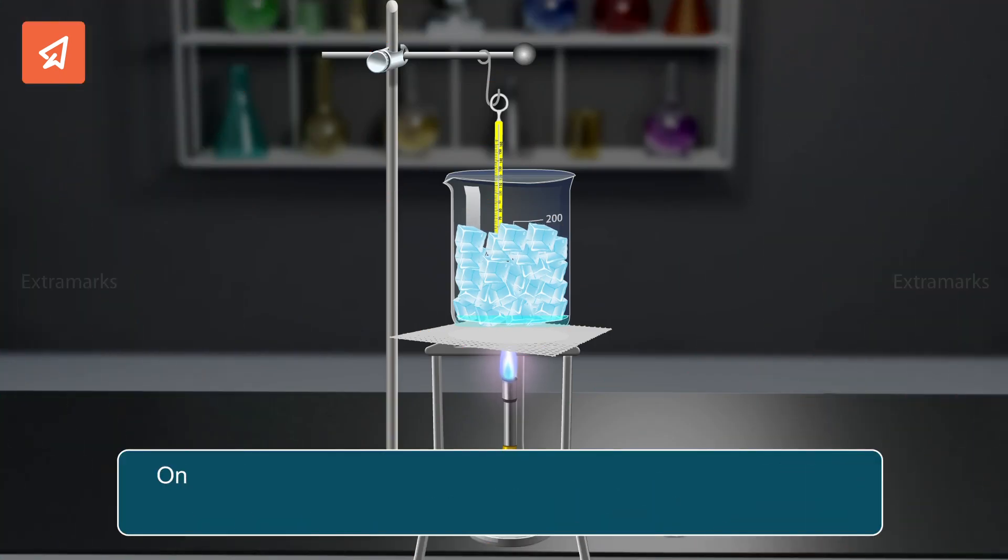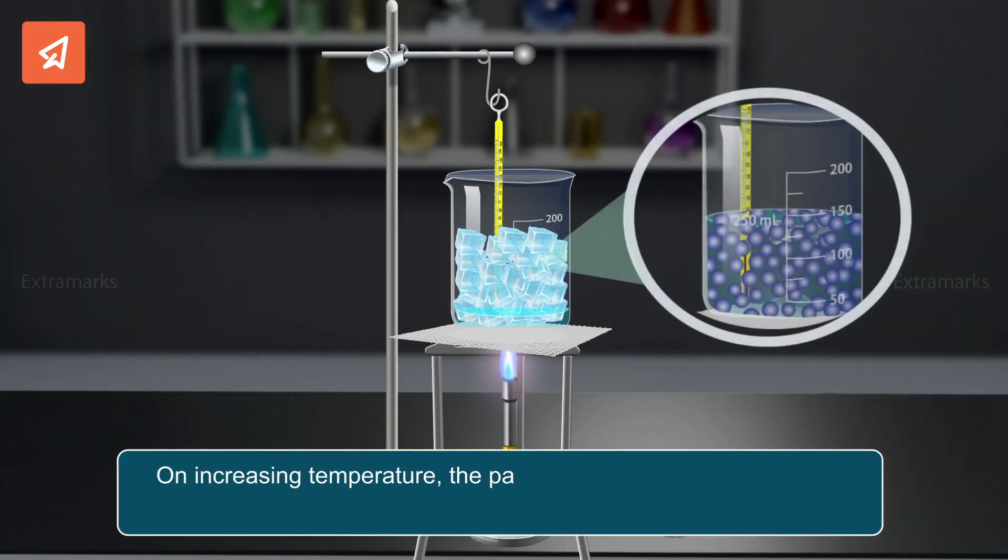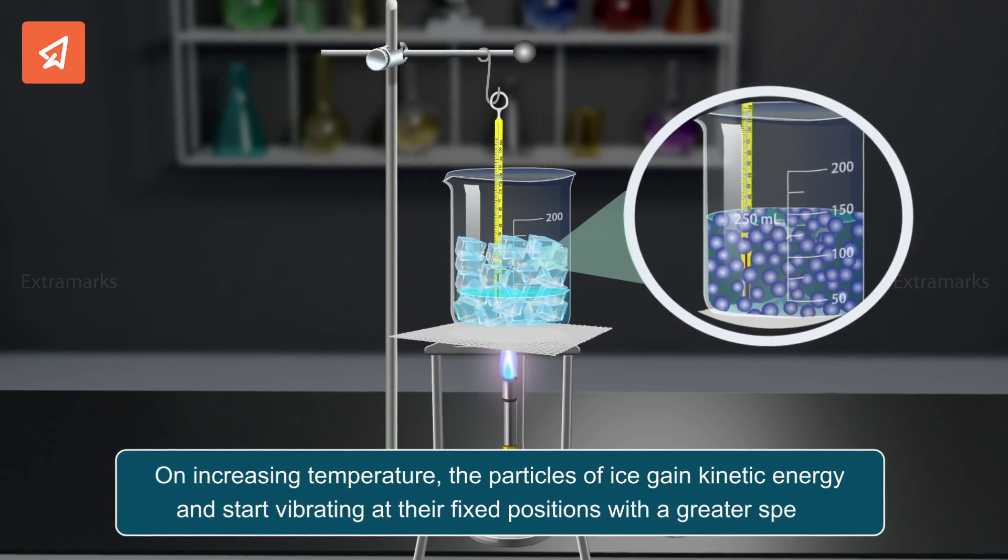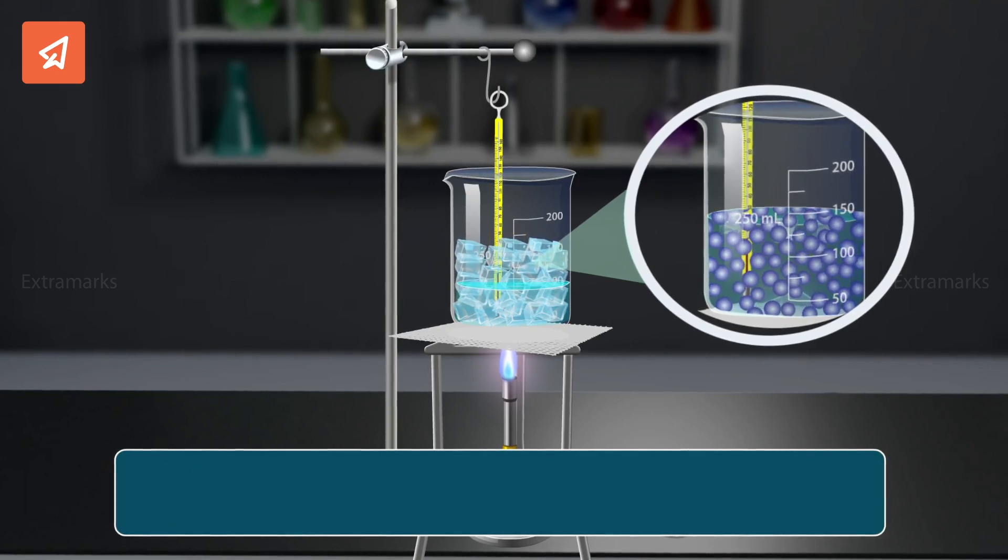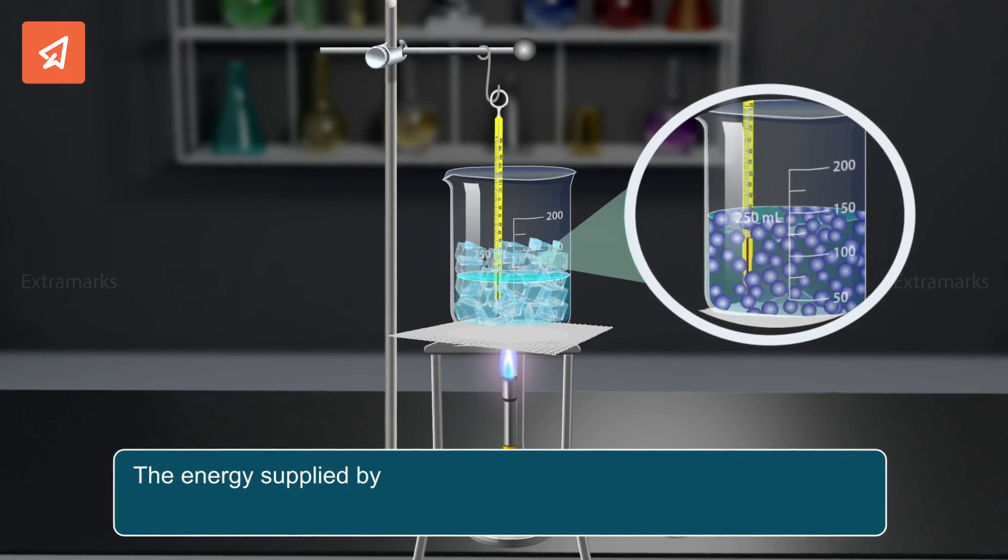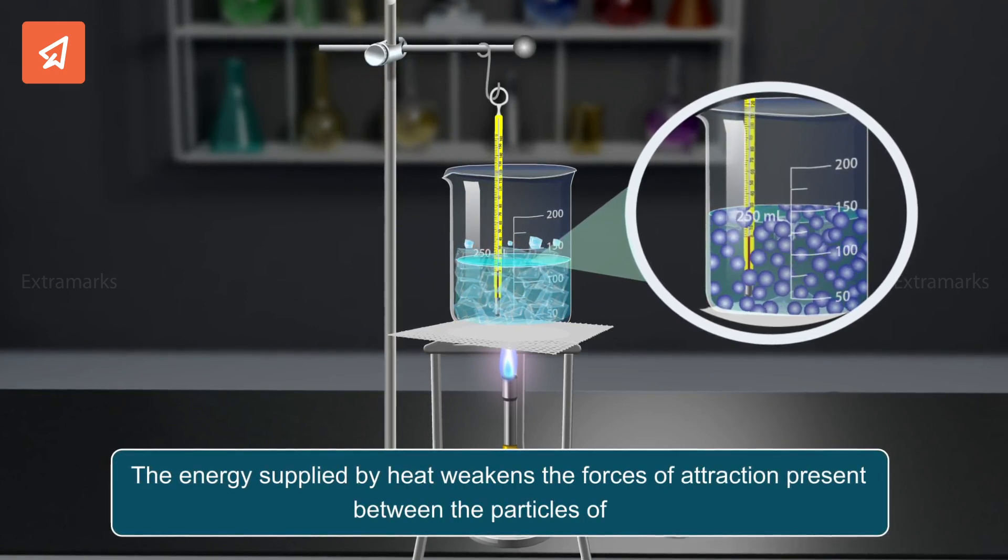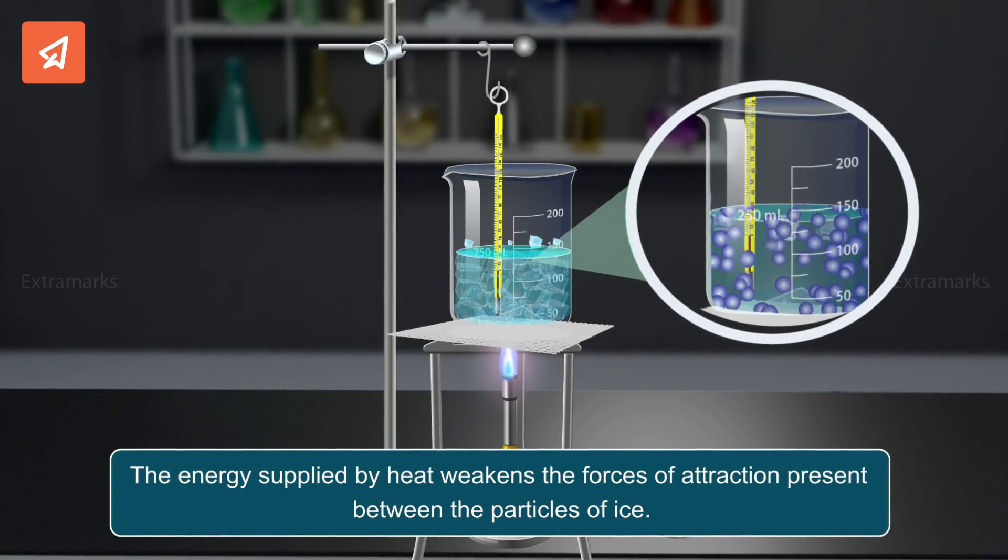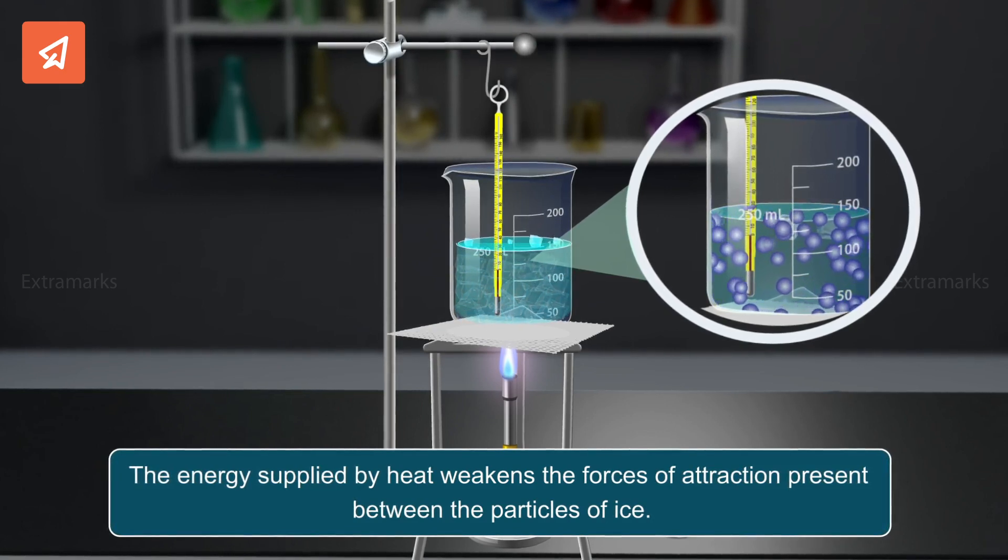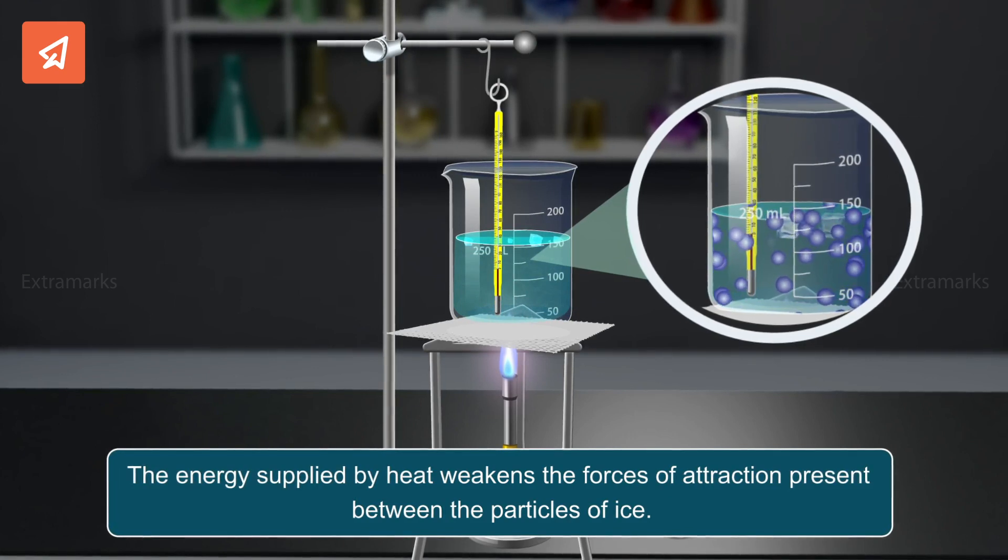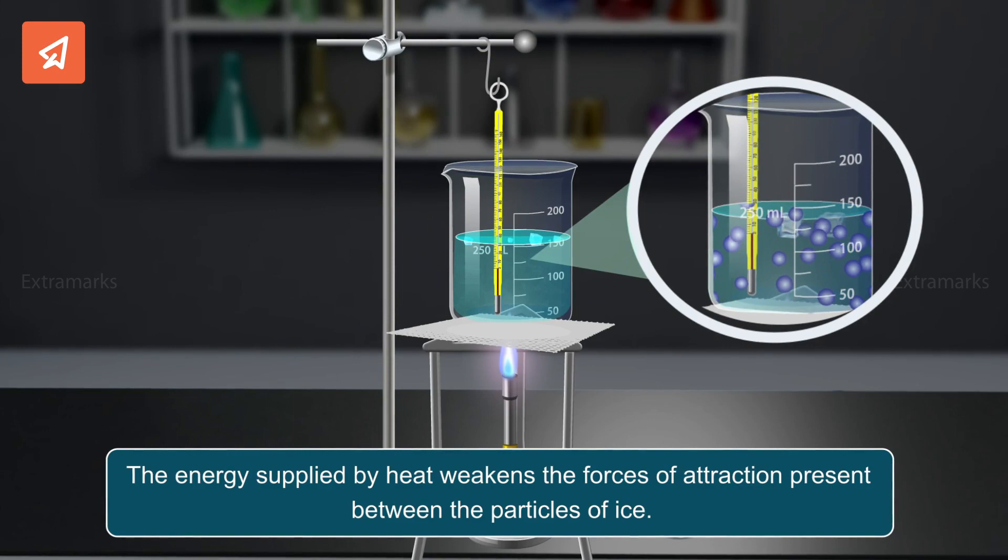On increasing temperature, the particles of ice gain kinetic energy and start vibrating at their fixed positions with a greater speed. The energy supplied by heat weakens the forces of attraction present between the particles of ice. As a result, ice melts and its particles leave their fixed positions and start moving freely. Finally, the ice melts completely and gets converted to water.